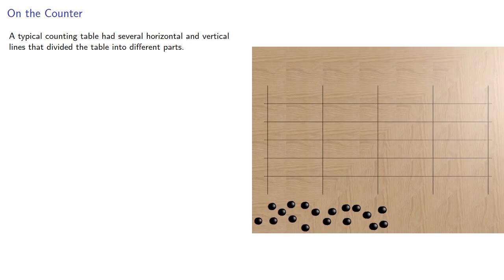A typical counting table had several horizontal and vertical lines that divided the table into different parts. Each horizontal line corresponded to a Roman numeral: the one, the ten, the hundred, or the thousand.